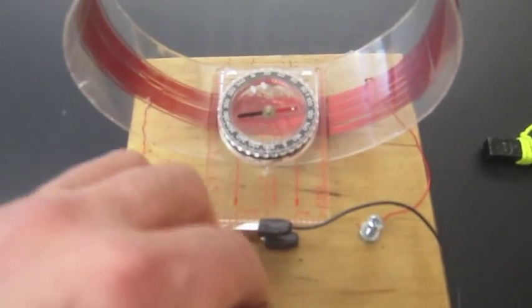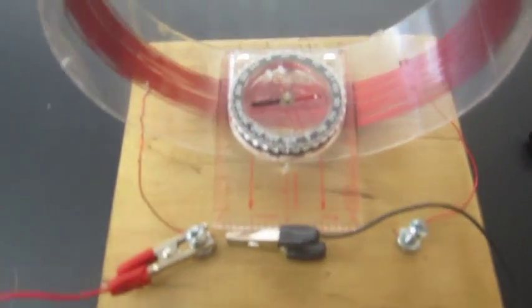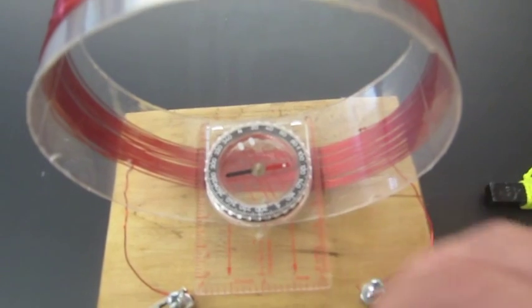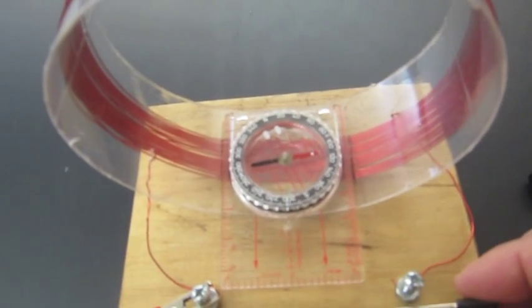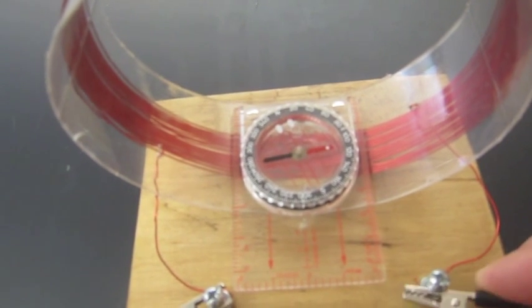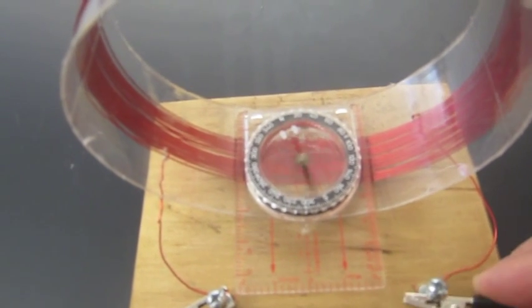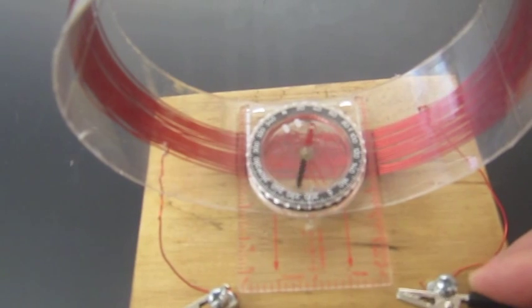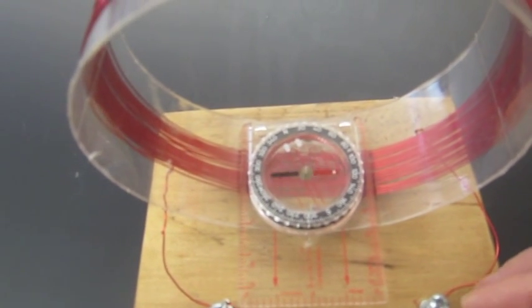And if we watch very closely if I energize the coil, once again we see it move perpendicular to that coil which is showing the magnetic field direction.